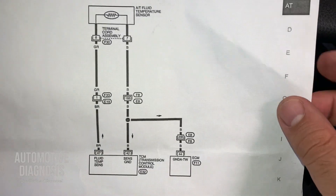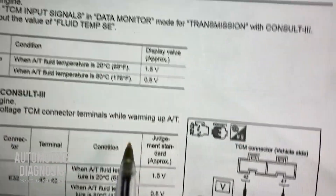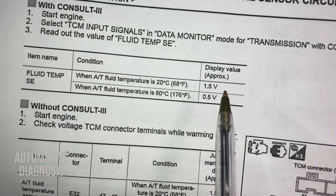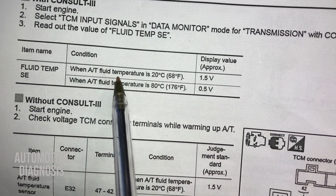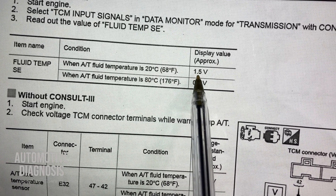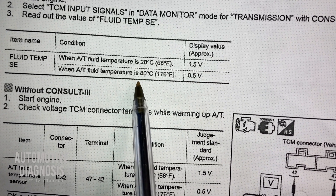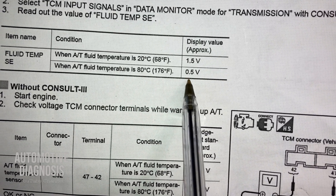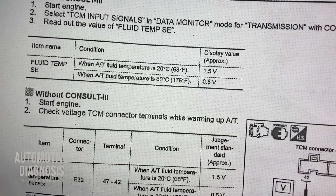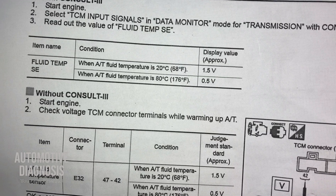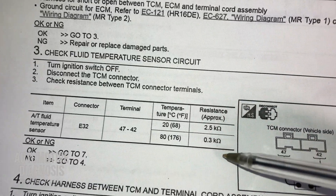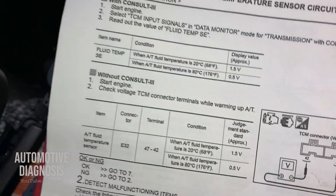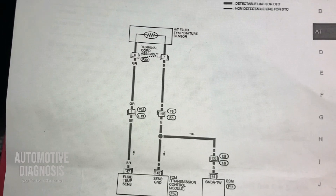Looking at the workshop manual for this fault code, I can see the temperature sensor output voltage specifications. On those two wires I can check the output voltage: when ATF temperature is at 20 degrees I should get 1.5 volts, and when transmission temperature is around 80 degrees I should get 0.5 volts. I can read this using the scan tool or measure it with a multimeter. There are also specifications for sensor internal resistance at two different temperature ranges.